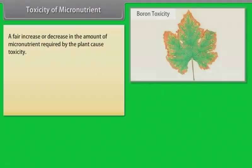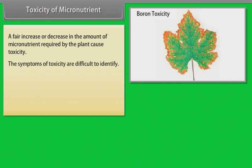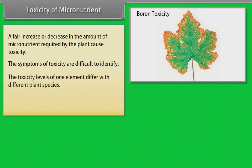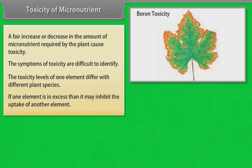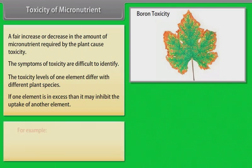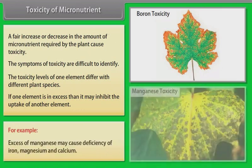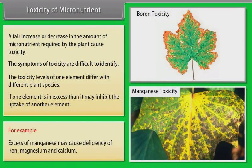Toxicity of micronutrients: a significant increase or decrease in the amount of micronutrient required by the plant causes toxicity. The symptoms of toxicity are difficult to identify. The toxicity levels of one element differ with different plant species. If one element is in excess, it may inhibit the uptake of another element. For example, excess of manganese may cause deficiency of iron, magnesium and calcium.